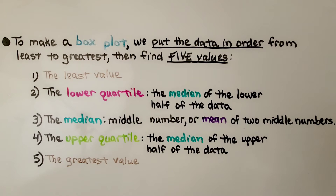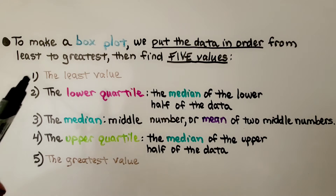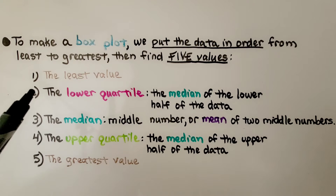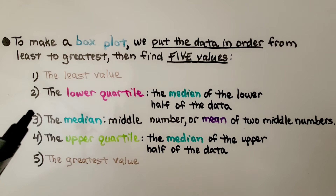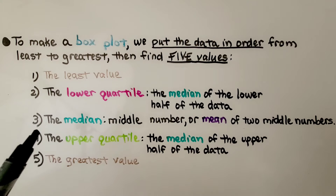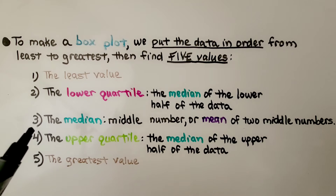To make a box plot, we put the data in order from least to greatest, then find 5 values. We find the least value and the lower quartile — that's the median of the lower half of the data. We find the median — that's the middle number or mean of 2 middle numbers. We find the upper quartile — that's the median of the upper half of the data — and the greatest value.